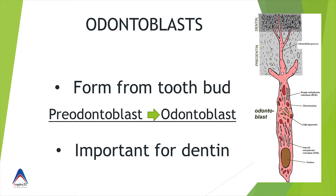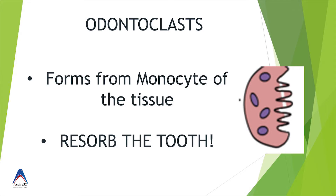It is important to remember that odontoblasts originate from pre-odontoblasts — and I will explain why this point is important. Odontoclasts are the second important cells, very active in the shedding process, and they originate from monocytes of the tissue. If you remember, we have macrophages and monocytes, so basically these are from the tissue and they convert to odontoclasts, which are mostly involved in resorption of the tooth.